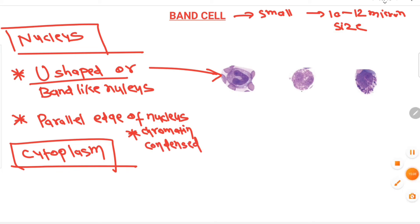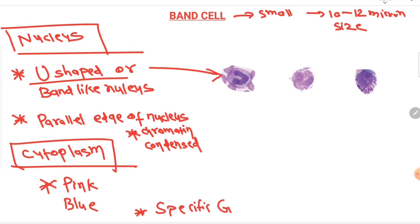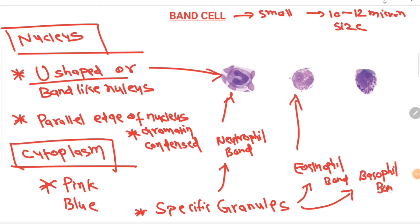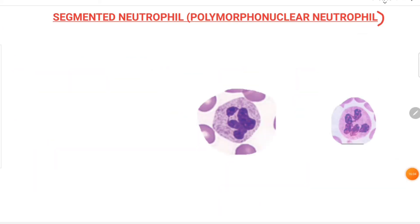The cytoplasm of the band cell is pink-blue in color, and specific granules are present. If the granule is pink-blue, a neutrophil will form; if red-orange, an eosinophil will form; and if blue-black, this cell originated from a basophilic myelocyte/metamyelocyte and a basophil will form.